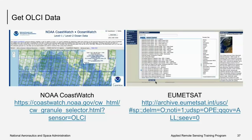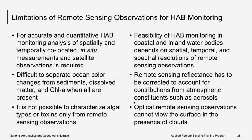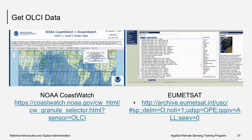The EUMETSAT site requires registration but is a straightforward source for downloading OLCI data. To summarize the satellites covered: Landsat ETM+ and OLI, Terra/Aqua MODIS, Sentinel-2A/2B MSI, Sentinel-3 OLCI, and VIIRS on SNPP. All these instruments carry visible and near-infrared spectral bands useful for detecting HABs.